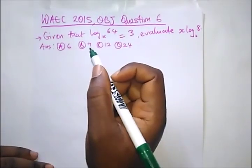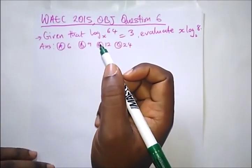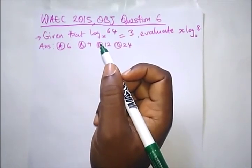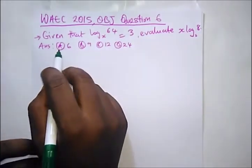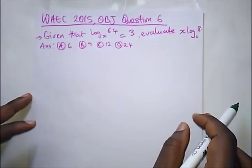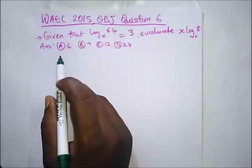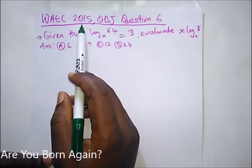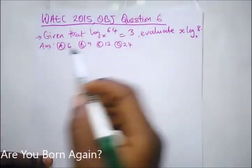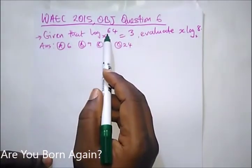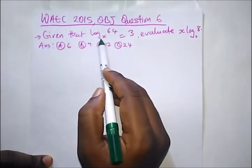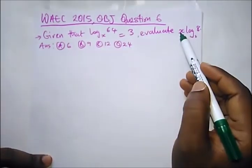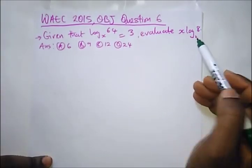Hello guys, welcome to Destined to Win Tutorials. Today we're going to be taking a look at past questions from WAEC on the theory of logarithms. Please stay tuned — remember, if you haven't subscribed to this channel, please subscribe to follow our videos. Here we have a question from 2015 OBJ question 6: given that log_x(64) equals 3, evaluate x·log_2(8).